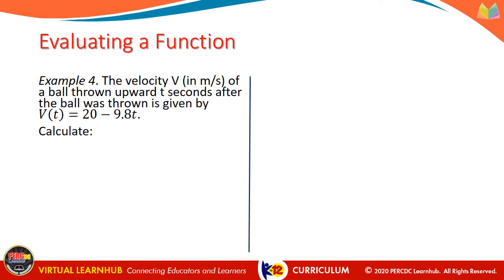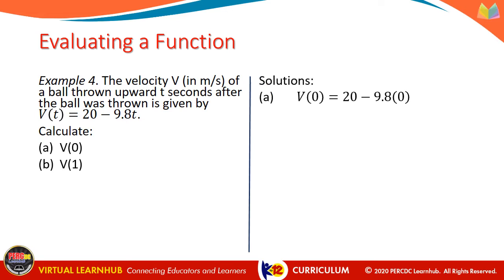Example number 4. The velocity v in meters per second of a ball thrown upward t seconds after the ball was thrown is given by v of t equals 20 minus 9.8t. Calculate a, v of 0, and b, v of 1. For letter a, v of 0 equals 20 minus 9.8 times 0 — we simply replace t with 0 — giving us 20 meters per second.